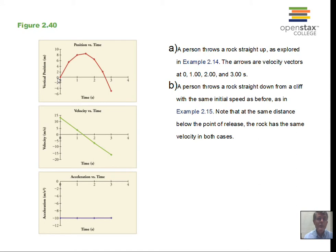Here is a graph of the motion showing position over time — the object goes up and comes back down to ground level. For velocity, the negative slope reflects the negative acceleration. The velocity starts at positive 13, goes to zero at the top of the motion, then becomes negative as the object heads back toward the ground. The acceleration is always minus 9.8, a constant acceleration, so we are allowed to use the kinematic equations.